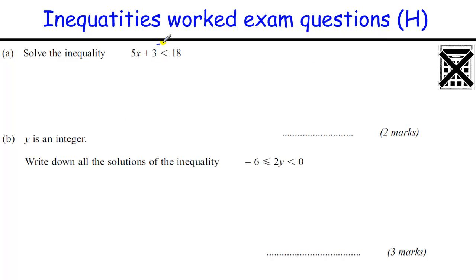So this inequality, 5x plus 3 less than 15, take away the 3, to get 5x is less than 12, divide by the 5 to get x is less than 2.4.